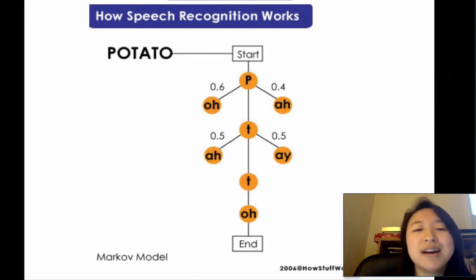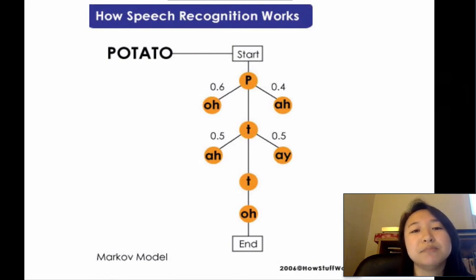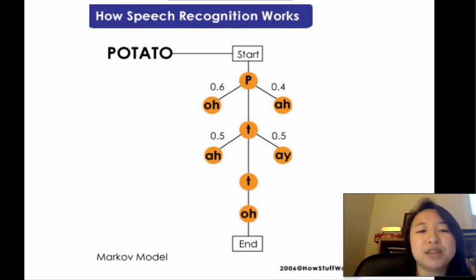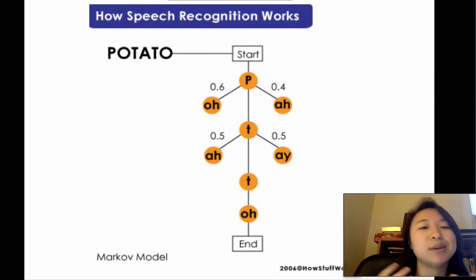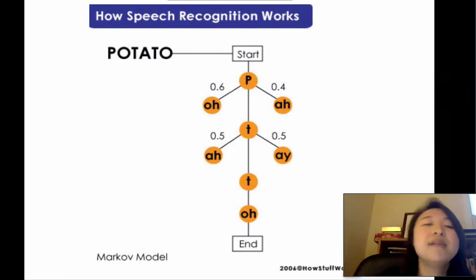In practical terms, the hidden Markov model accounted for differences in accents as well as different cadences. For example, it could recognize both 'potato' and 'potato.' Unfortunately, even with this advancement, you still had to speak very unnaturally using pauses between words — called discrete speech — and couldn't speak in a continuous natural flow.